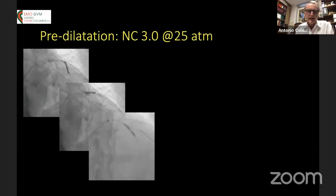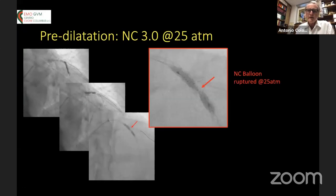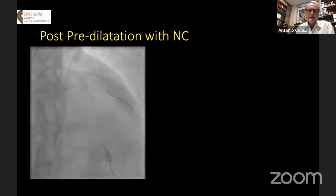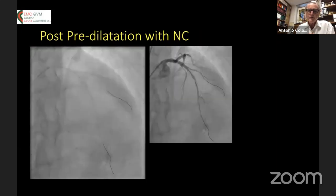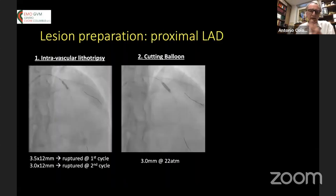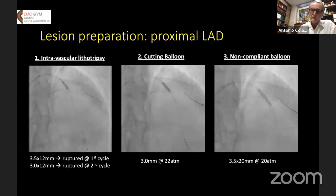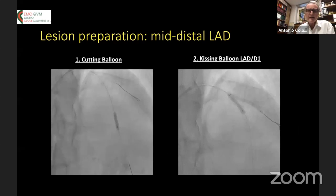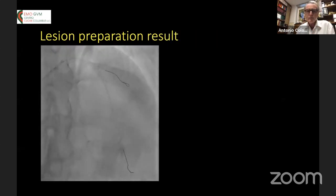There is some indentation. You may use a cutting balloon. In this case we went with IVUS. We did lithotripsy, but you can do rotational ablation — whatever you are used to. Let's go quickly about lesion preparation, which is basically standard. We did cutting balloon and kissing balloon.